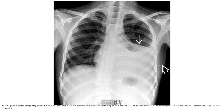A radiograph indicates a large lateral expression in a symptomatic child with a left-sided choroid plexus shunt catheter, and an additional lateral view will provide better assessment of the catheter tip location.